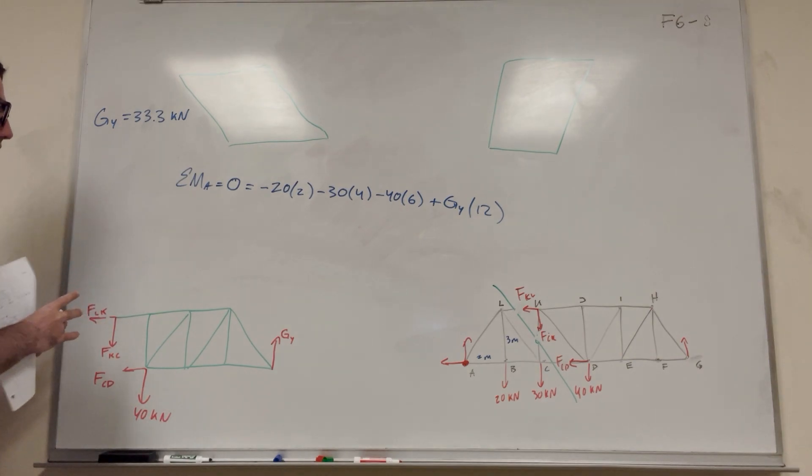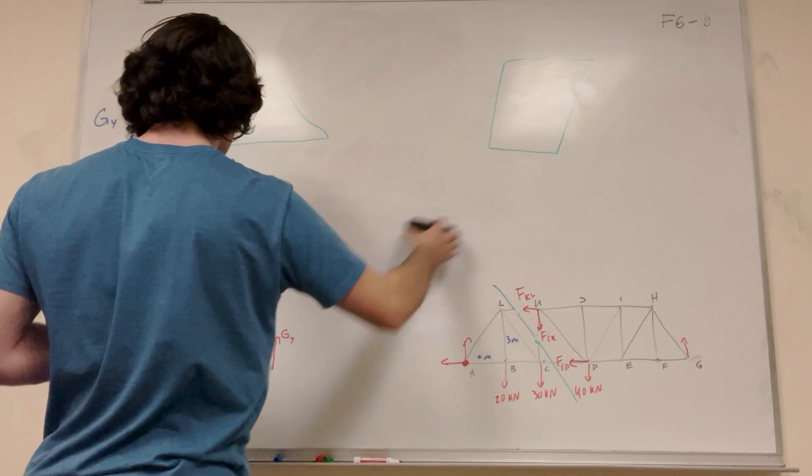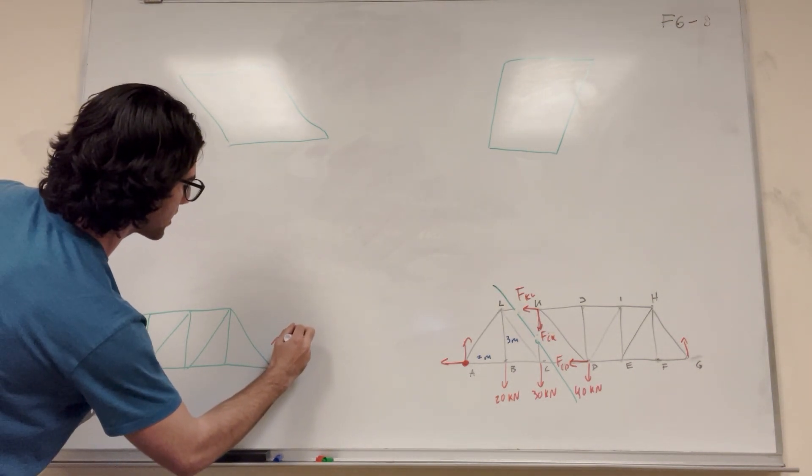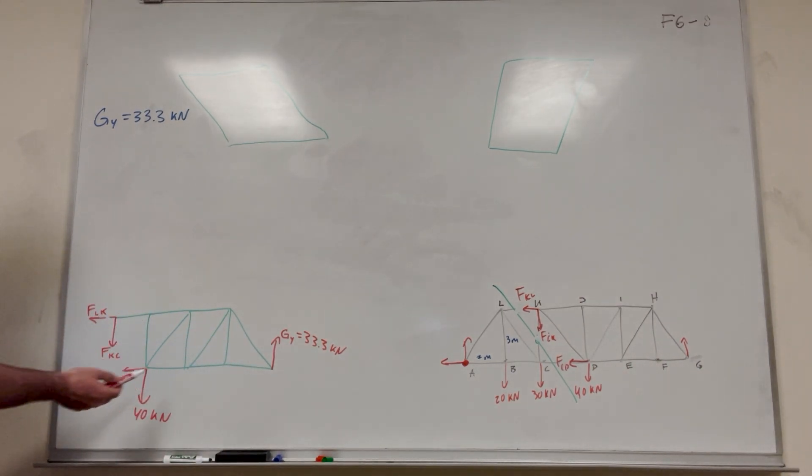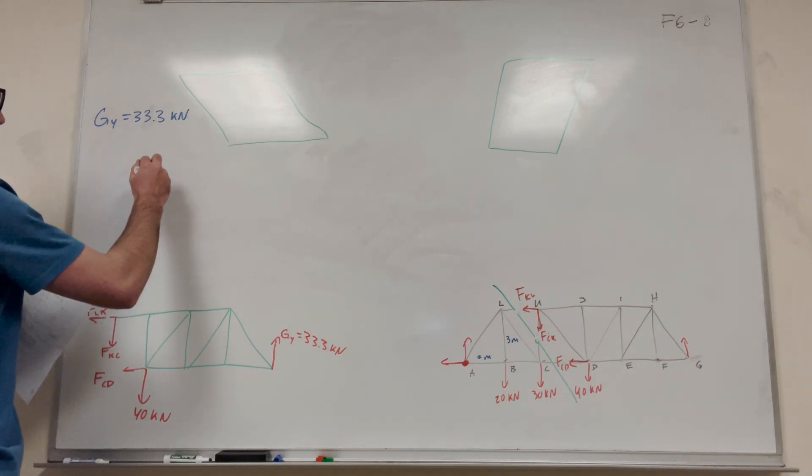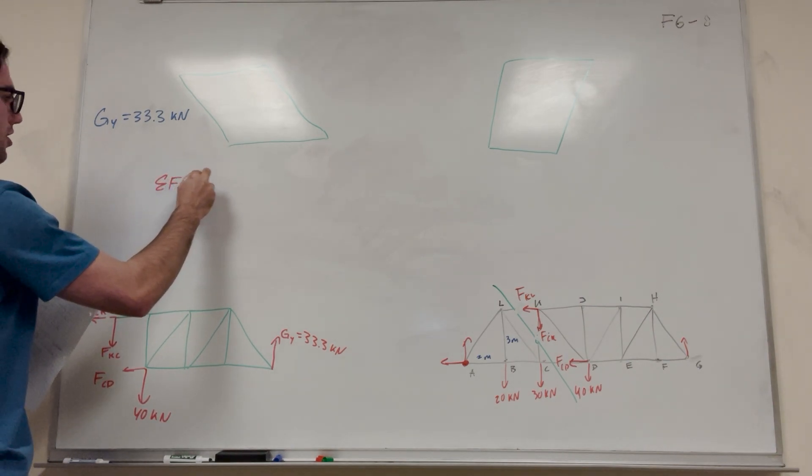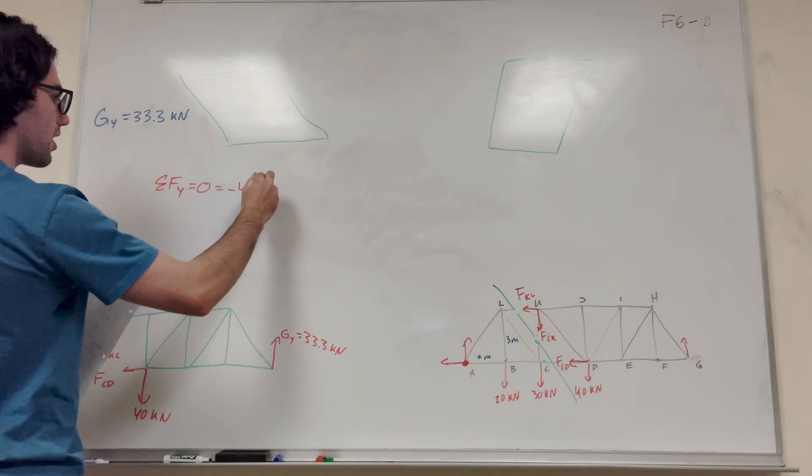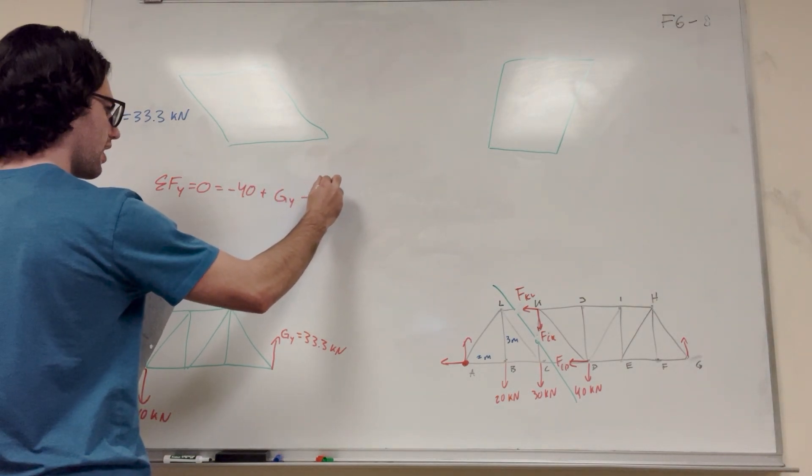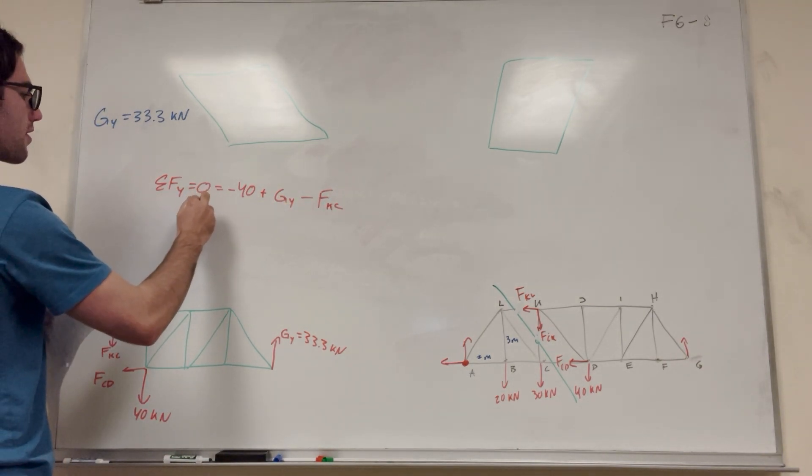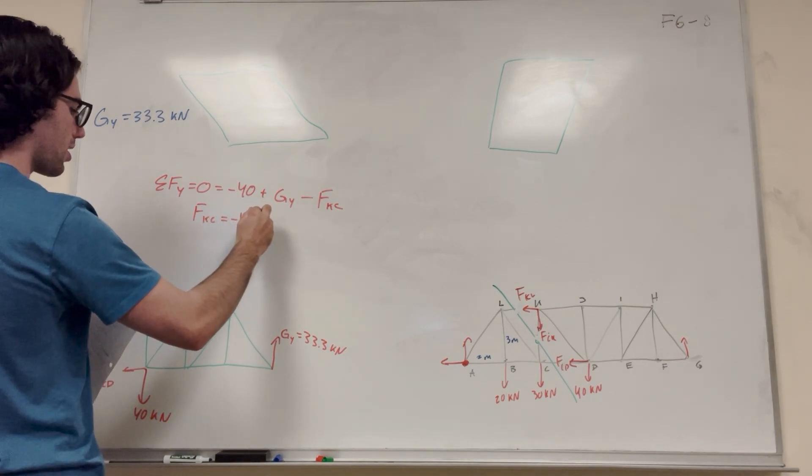That's very nice. So now we can go ahead and solve. So just heading back to this body diagram, we have said G of Y is now 33.3 kilonewtons. And that's going to be super handy. Let's do it. So if we look in here, let's do some of the forces Y, because we know this is pointing Y, so 40. G of Y pushes Y, and FKC pushes Y, but CD and LK push only the X. That means we can find KC. So looking at this body diagram, some of the forces in the Y is equal to zero. That's equal to negative 40 plus G of Y, and then minus FKC. So we're looking for FKC. So FKC is equal to negative 40 plus 33.3.